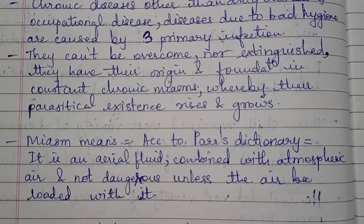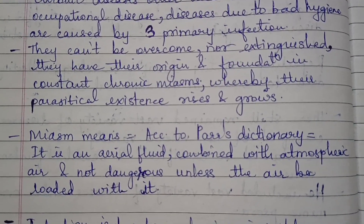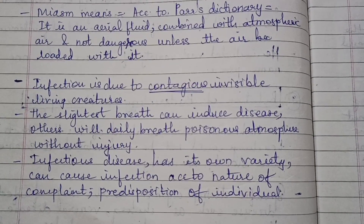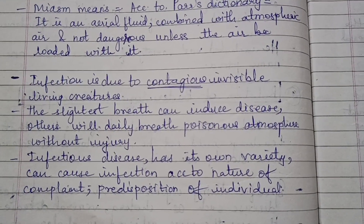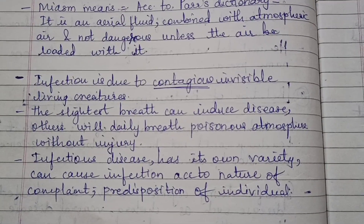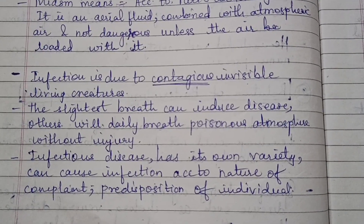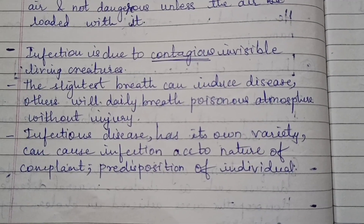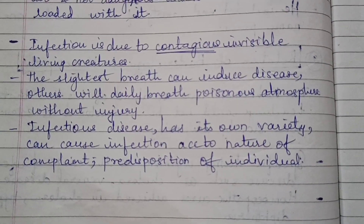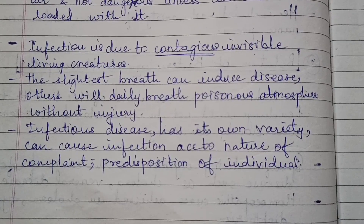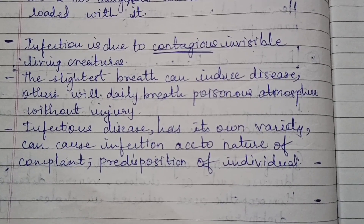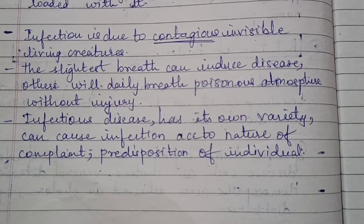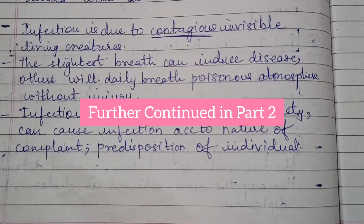They have their origin and foundation in a constant chronic miasm, whereby their parasitical existence rises and grows. Miasm means, according to Parr's dictionary, an aerial fluid combined with atmospheric air, not dangerous unless the air be loaded with it. Infection is due to contagious, invisible living creatures. The slightest breath can induce disease, while others will daily breathe a poisonous atmosphere without injury. Infectious disease has its own variety and can cause infection according to the nature of the complaint and the predisposition of individuals.